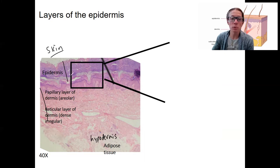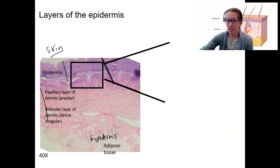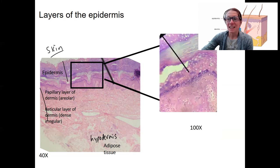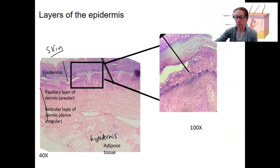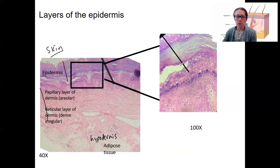If we zoom in to the epidermis, we can see there are things that look different. It's actually all stratified squamous epithelium, but the cells are in different stages of development. So all epithelial cells, but they look pretty different.